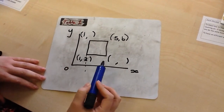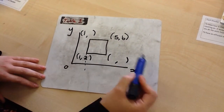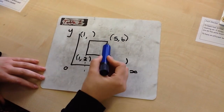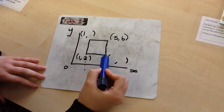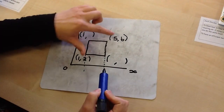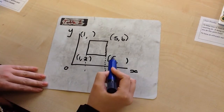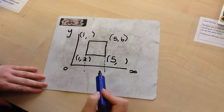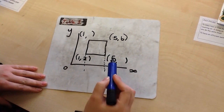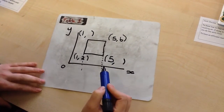The same applies for this side with my x-axis — I can see that the whole of this side goes down to where 5 would be, so I then know that this coordinate is going to be 5, 2.